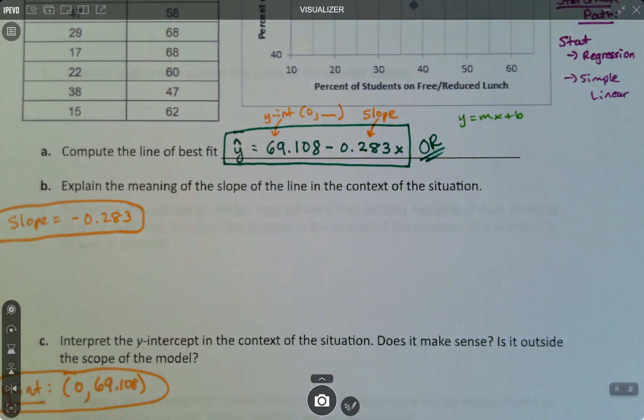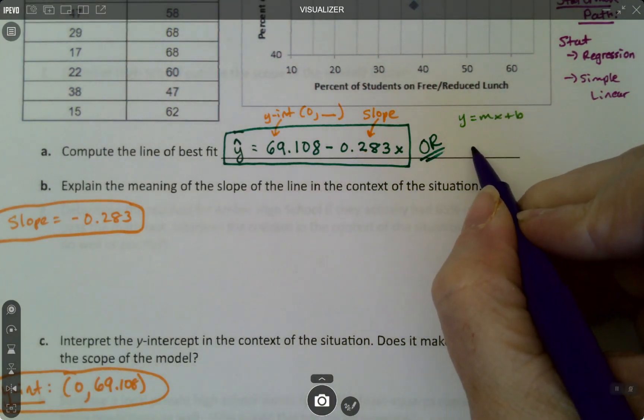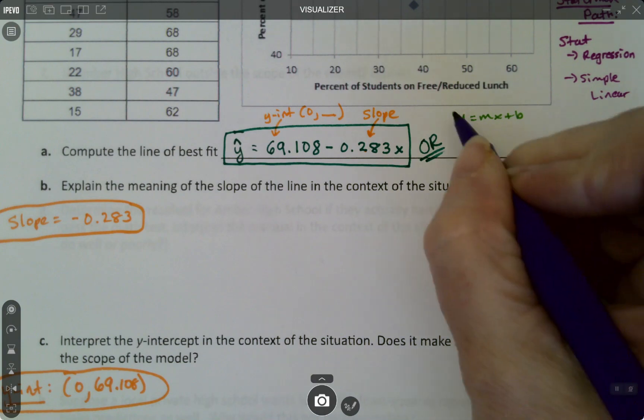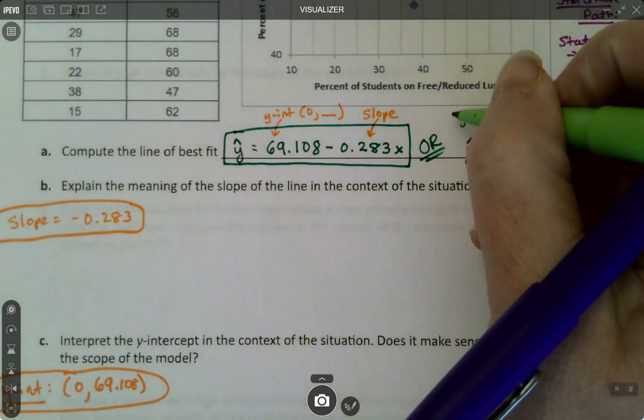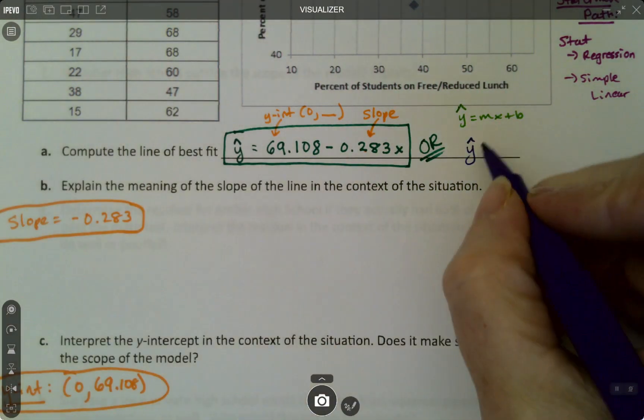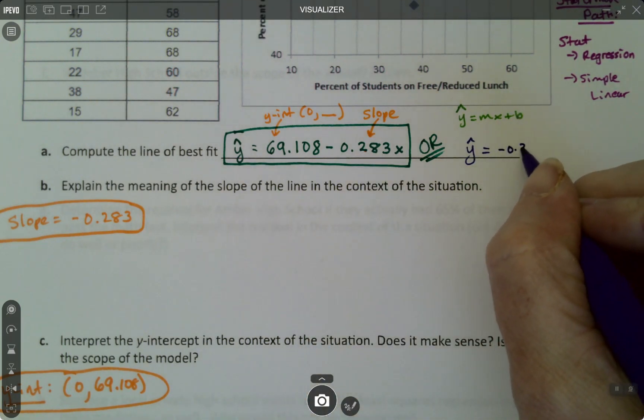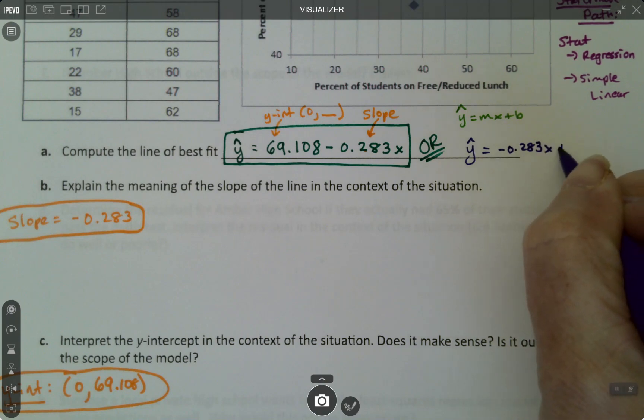And then if you're going to write it that way, it would be Y hat equals, or Y hat of course, because the real Y's are the ones in the table. So it'd be Y hat equals, and then the slope. That's the negative 0.283X plus 69.108.